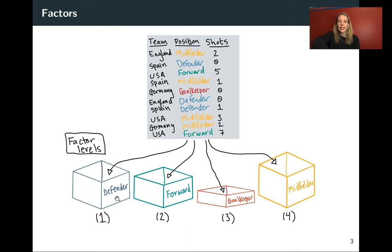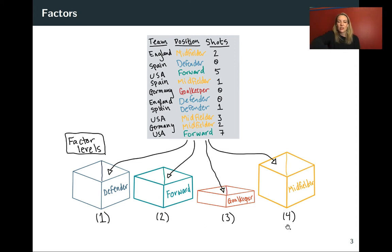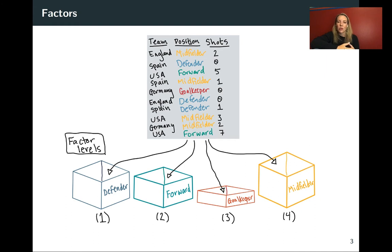R thinks of factors almost like bins, where each observation can have a value that goes into just one of the factor levels or bins. Underneath the hood, R saves these as a number and then remembers which number corresponds to which factor level. Depending on the order R stored those levels, you might get a different order when you plot values with that factor or do other things with it.